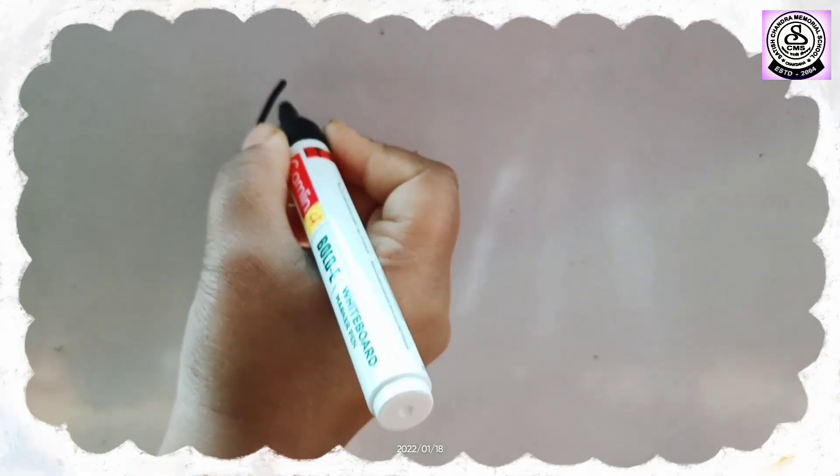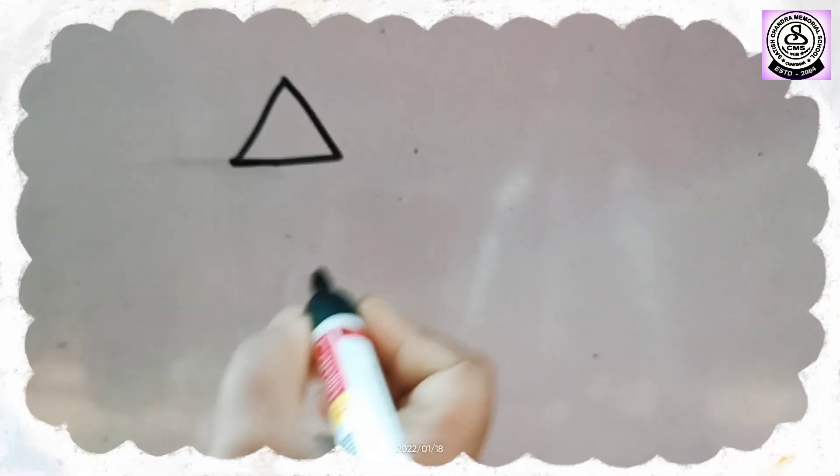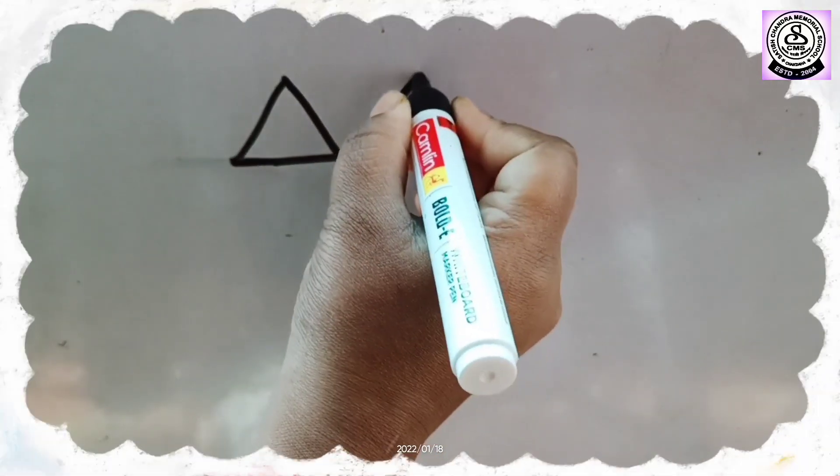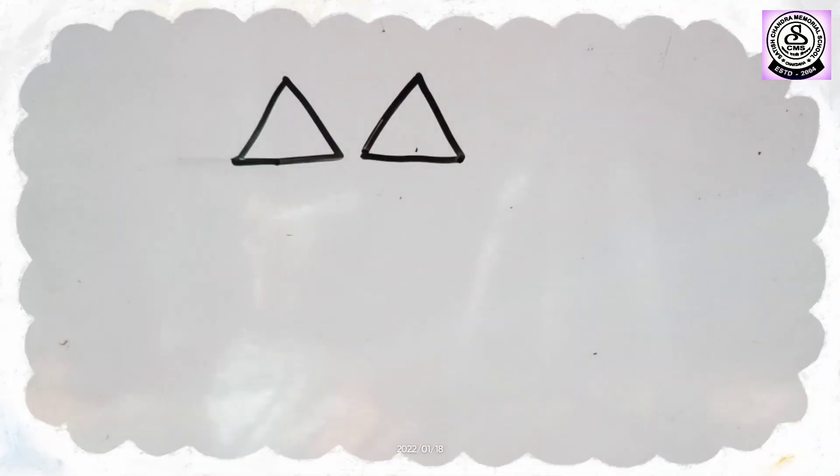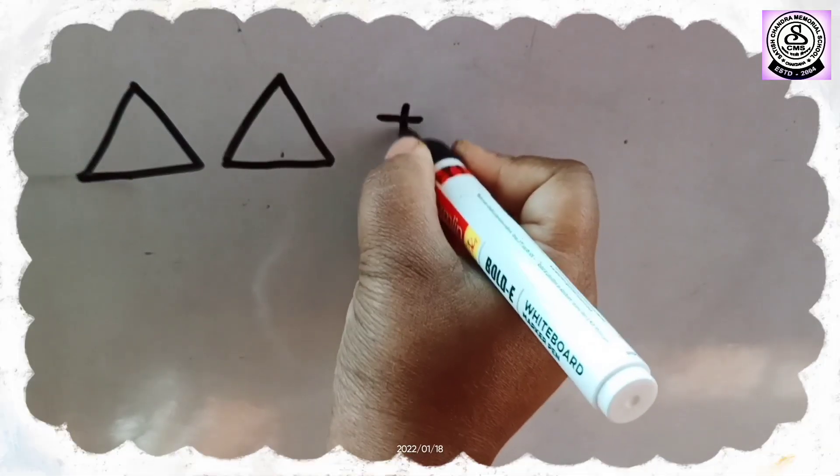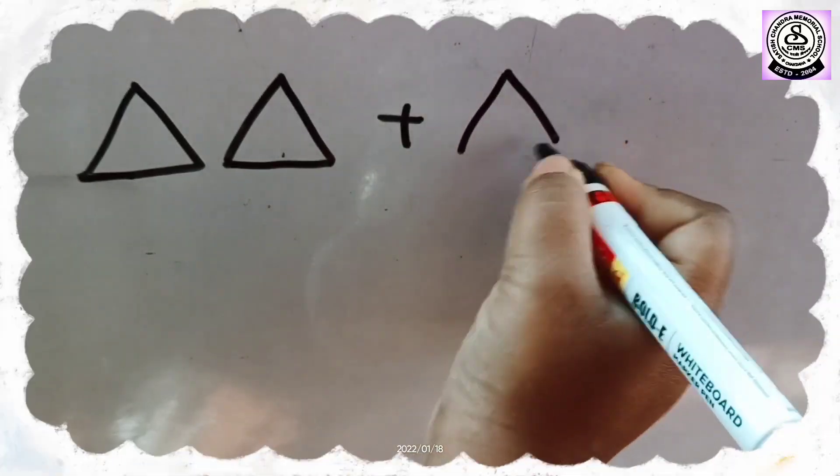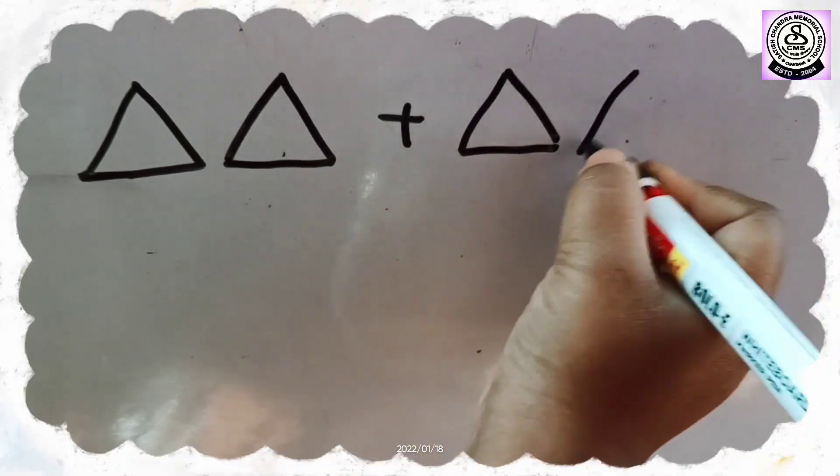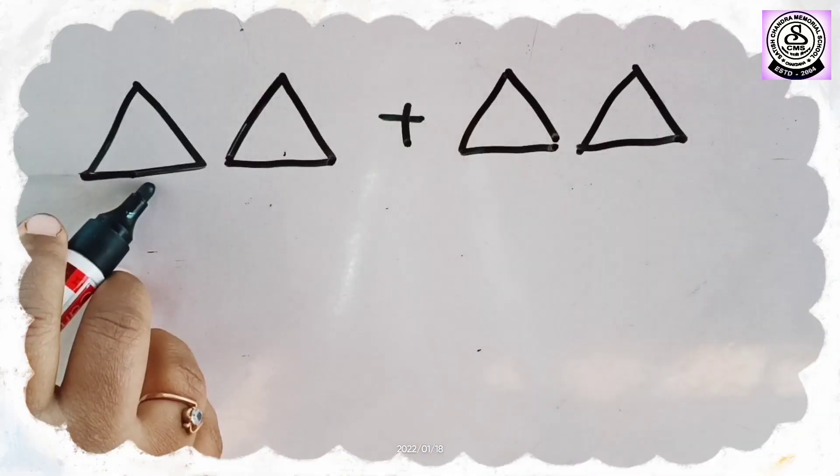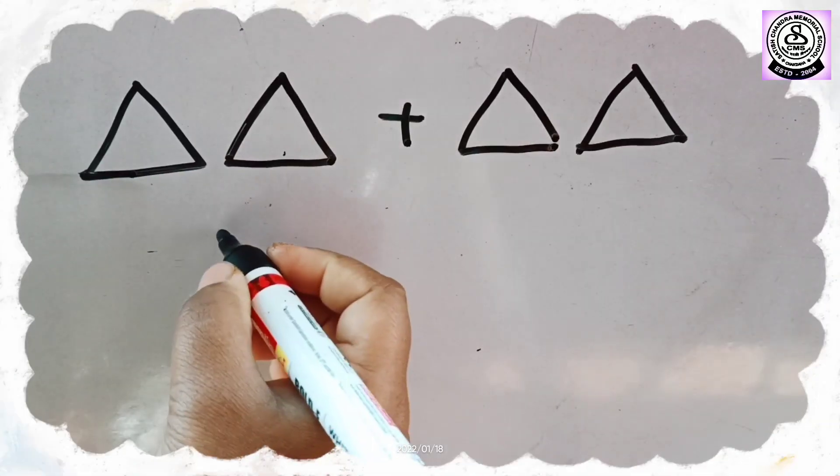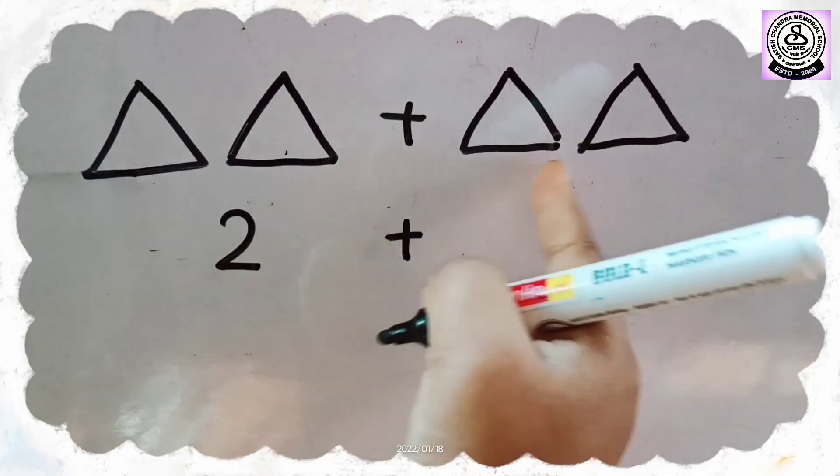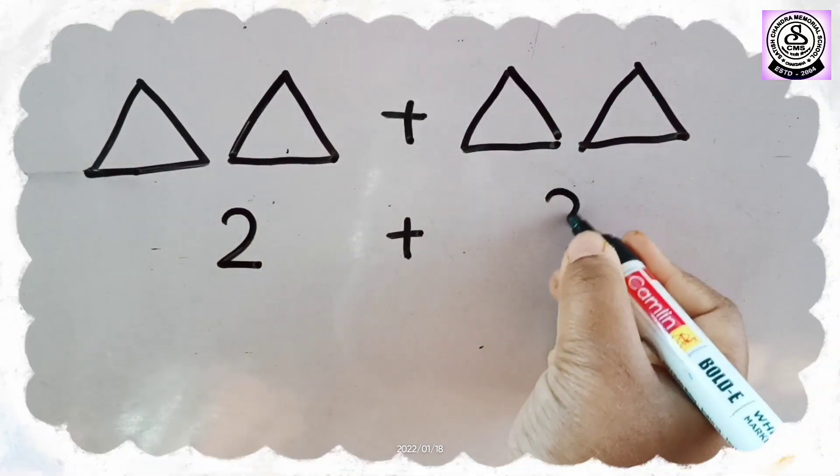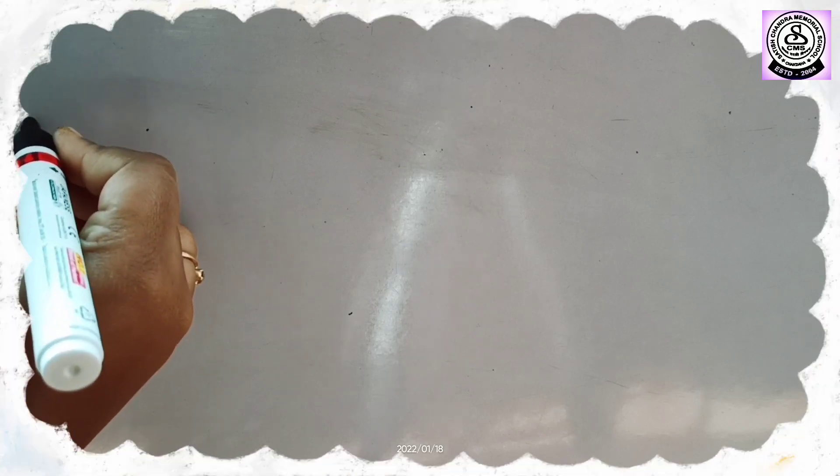Can you tell me which shape am I drawing? Yes, it's triangle. So here I have drawn triangles. Then plus sign. And then again I will draw triangles. Now let's count how many triangles here? 2. 2 plus. And again how many? 1, 2. So 2 plus 2. So let's see another example.